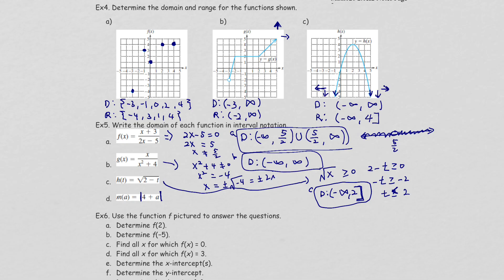For the last function involving absolute value: absolute value has no restrictions — you can put any number inside, even a negative, and the result will still be positive. So there is no restriction and the domain is all real numbers: (-∞, +∞). In summary, the only equations with restrictions we've learned so far are fractions (denominator ≠ 0) and square roots (inside ≥ 0).